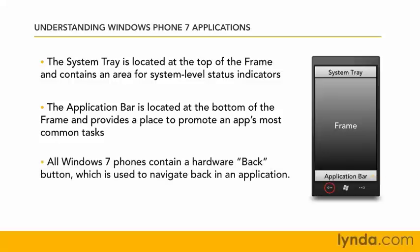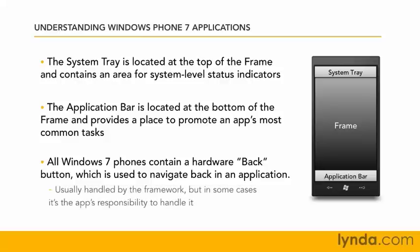All Windows Phone 7 devices also contain a back button, which you can see highlighted. This back button is implemented in hardware — all Windows phones have it. It is used to navigate back within an application and is usually handled for you by the framework. However, in some cases it's your application's responsibility to handle the back button — for example, a web browser might use back button presses to go back within web pages rather than application pages.